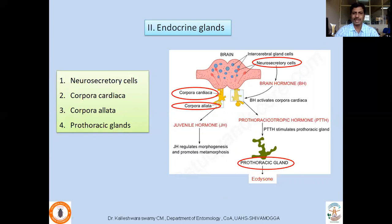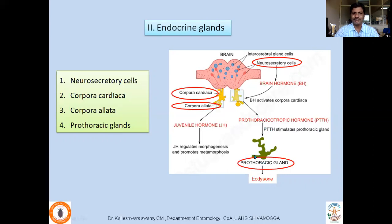Neurosecretory cells are found within the brain and their secretions are collectively called brain hormone. This brain hormone activates the corpora cardiaca, which are paired glands found just behind the brain. The corpora cardiaca in turn secrete the prothoracicotropic hormone, or PTTH. PTTH in turn stimulates the prothoracic glands, which are paired structures found in the prothoracic region, to secrete ecdysone — the molting hormone. Attached just behind the corpora cardiaca are the corpora allata, which produce juvenile hormone.